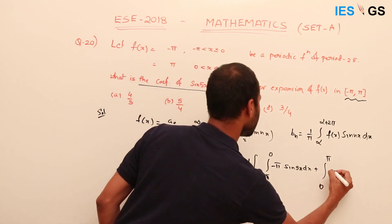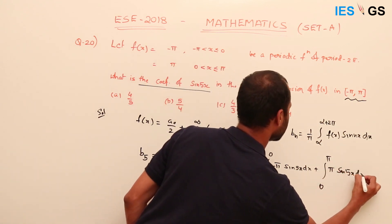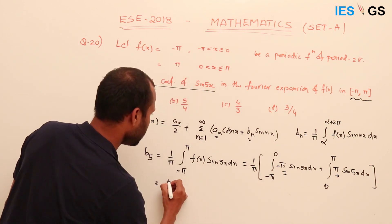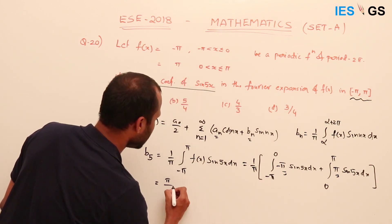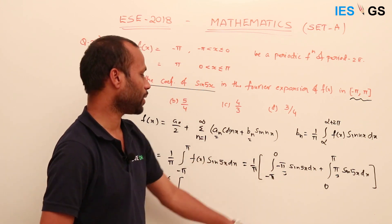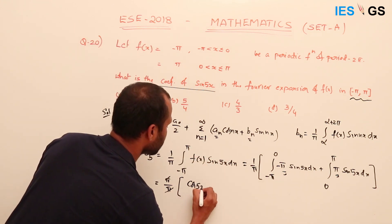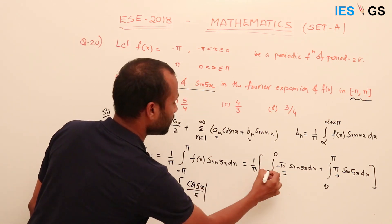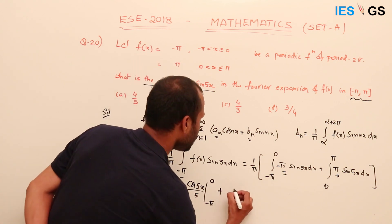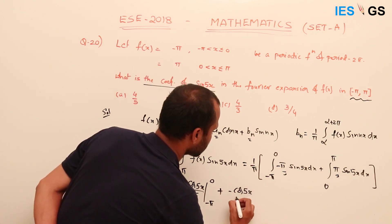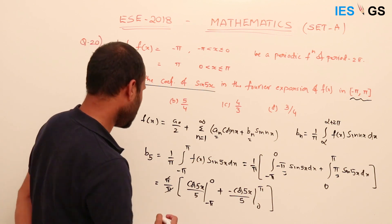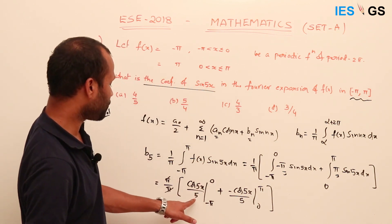Taking π as a common factor from both terms, π/π cancels, leaving: [∫[−π to 0] −sin(5x) dx + ∫[0 to π] sin(5x) dx]. The integral of −sin(5x) is cos(5x)/5, evaluated from −π to 0, plus the integral of sin(5x) which gives −cos(5x)/5, evaluated from 0 to π.